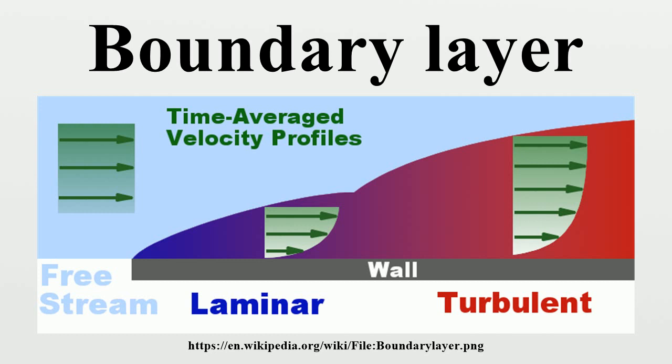For a sufficiently high Reynolds number, the flow over a surface can be divided into an outer region of inviscid flow unaffected by viscosity, and a region close to the surface where viscosity is important. Using scale analysis, the equations of motion reduce within the boundary layer for incompressible fluid. The order of magnitude analysis assumes the streamwise length scale is significantly larger than the transverse length scale inside the boundary layer, so variations in properties in the streamwise direction are generally much lower than those in the wall-normal direction. Applying this to the continuity equation shows that the wall-normal velocity is small compared with the streamwise velocity.